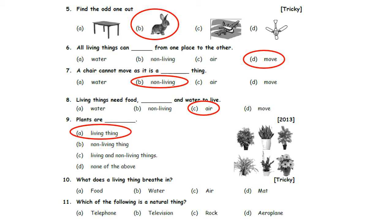What does a living thing breathe in? Option A: Food. Option B: Water. Option C: Air. Option D: Mud. All living things need air to breathe in. So, Option C, Air, is the correct answer.